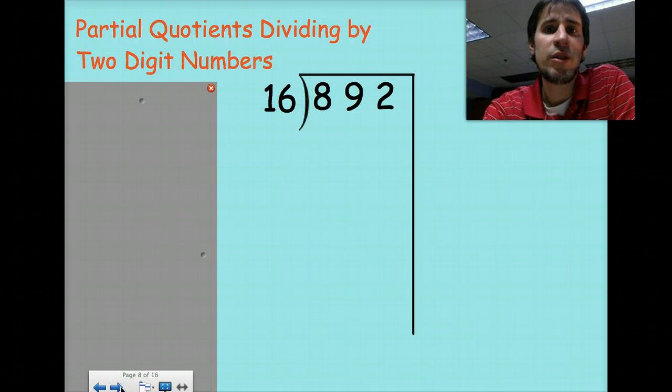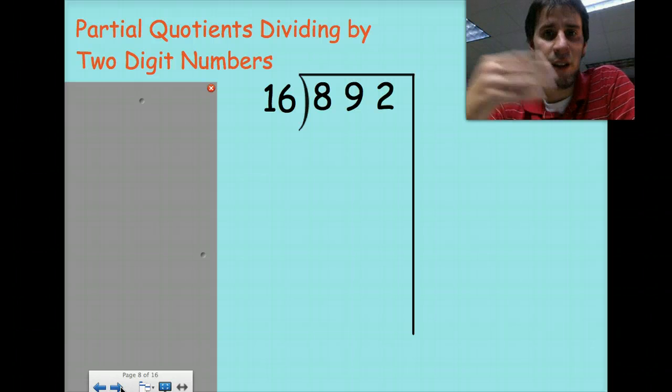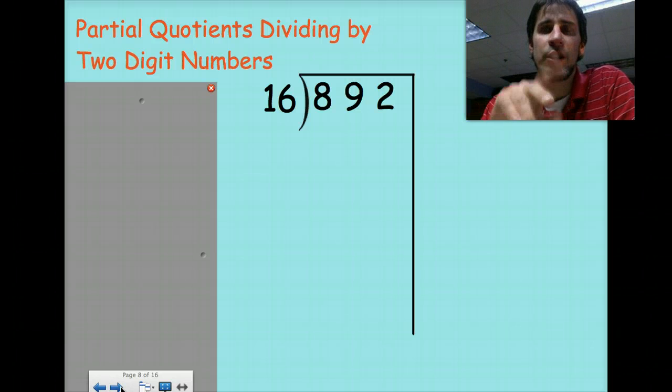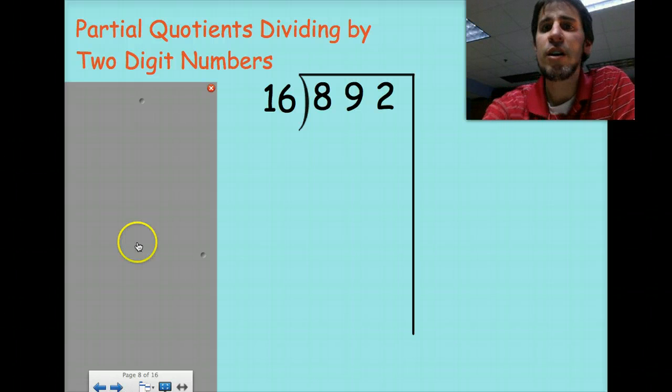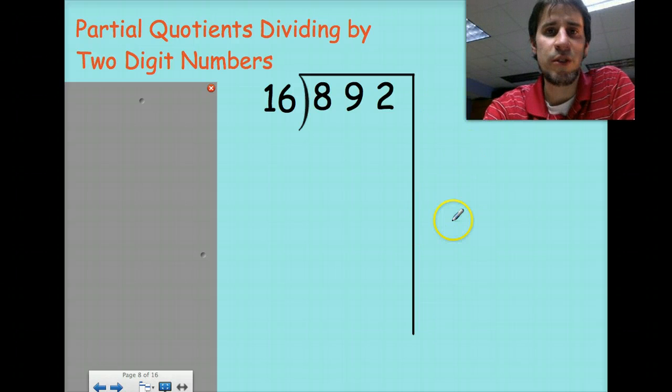So now this is where you're going to see the advantage using partial quotients instead of your standard drop-down method that you can only do one way with. Because you remember I said with partial quotients there are different numbers you can use on the side as long as you get to the same answer. It's okay if you use different numbers to get to the final answer.